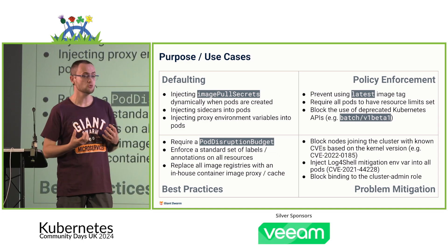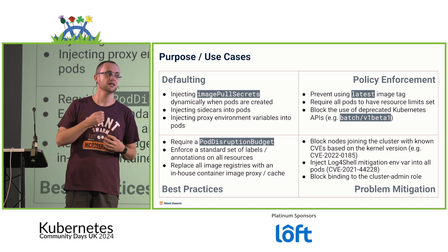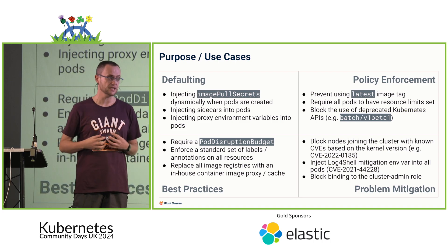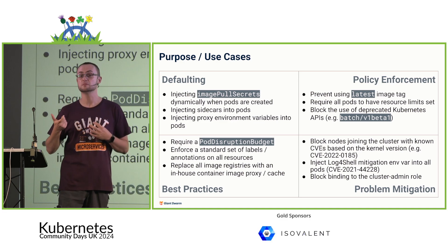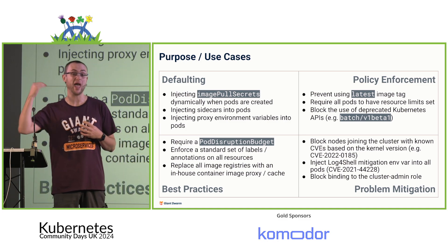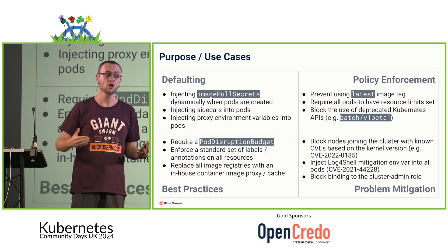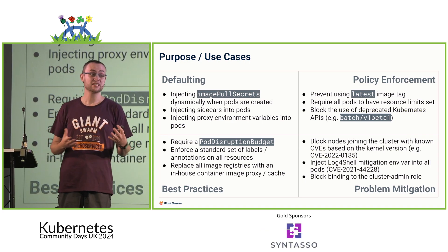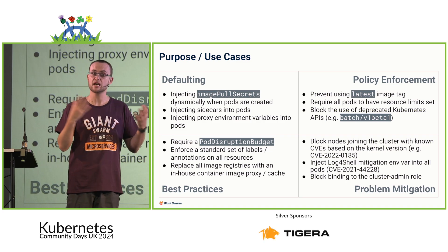They can do policy enforcement — making sure you don't use the latest tag for images, so you're only pulling immutable images, improving security. They can enforce best practices like making sure pod disruption budgets are used. And my favorite area: problem mitigation. With the log4shell vulnerability, we had a mutating webhook that injected the specific environment variable with the correct value into every new pod created, meaning our entire cluster was no longer vulnerable to that CVE until an actual fix was available — even if the pod itself didn't have a vulnerable application.